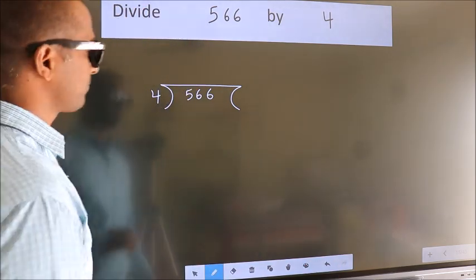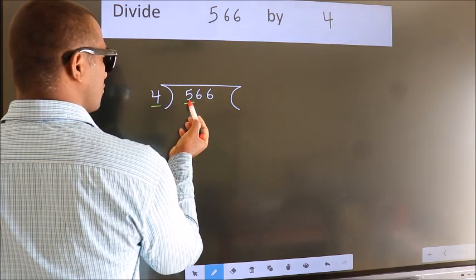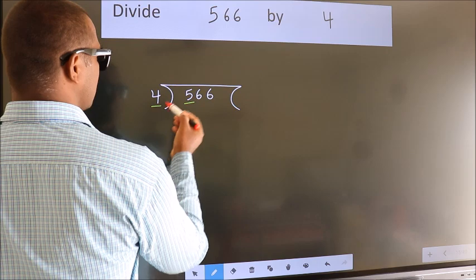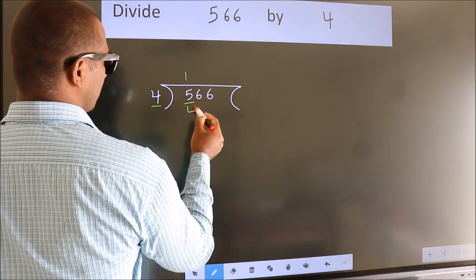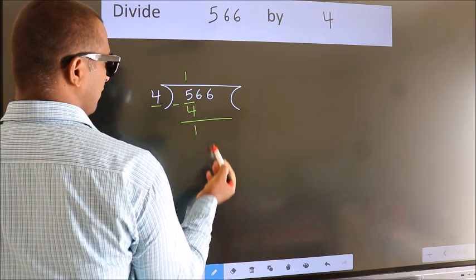Next. Here we have 5, here 4. A number close to 5 in 4 table is 4 once 4. Now, we should subtract. We get 1.